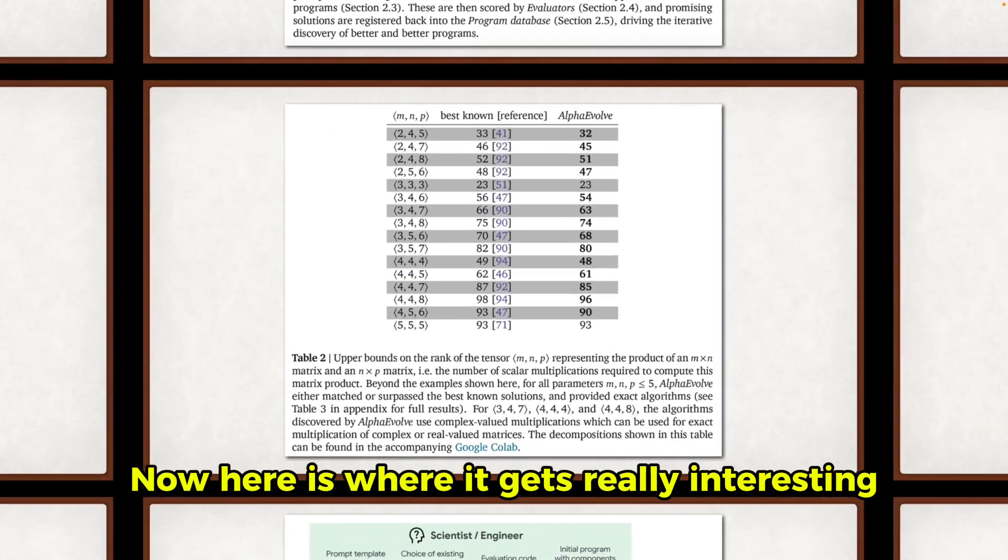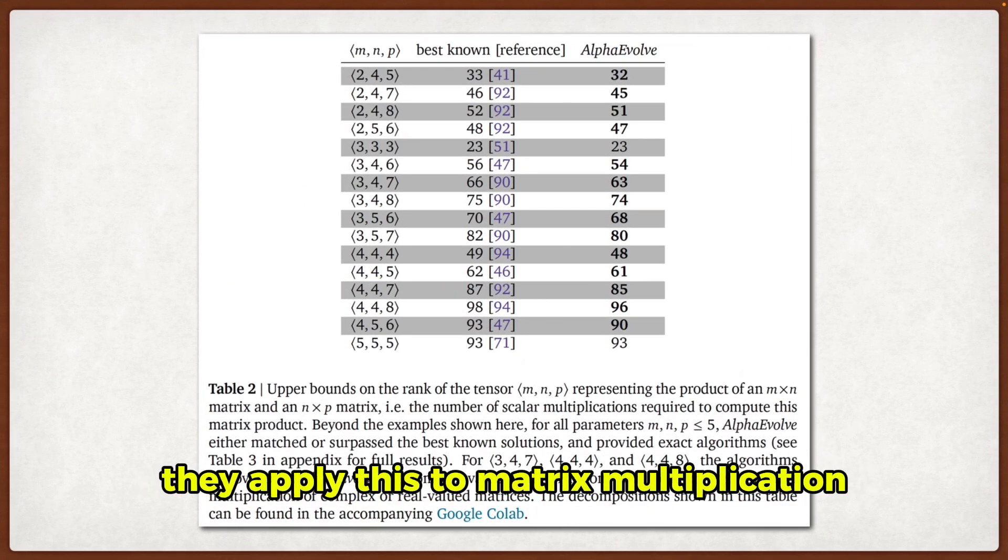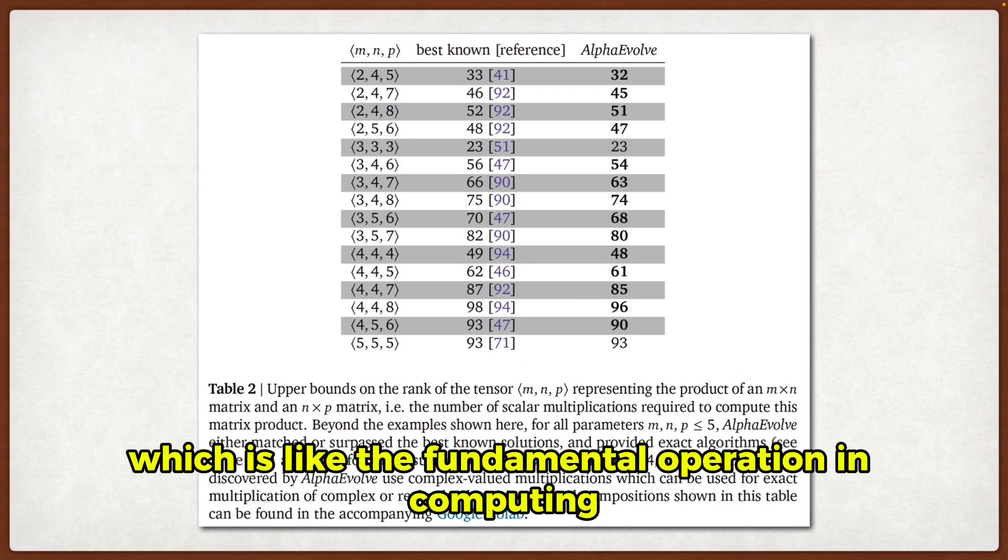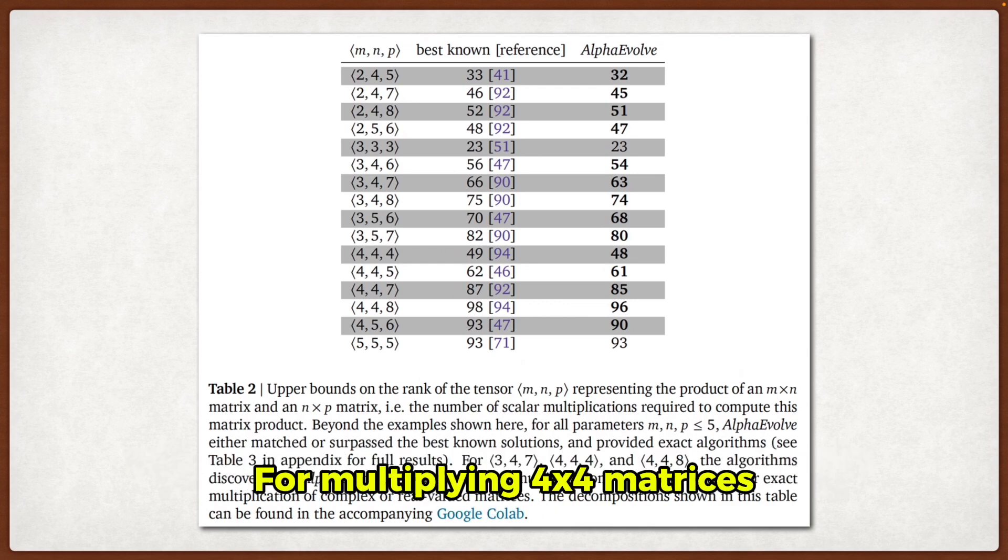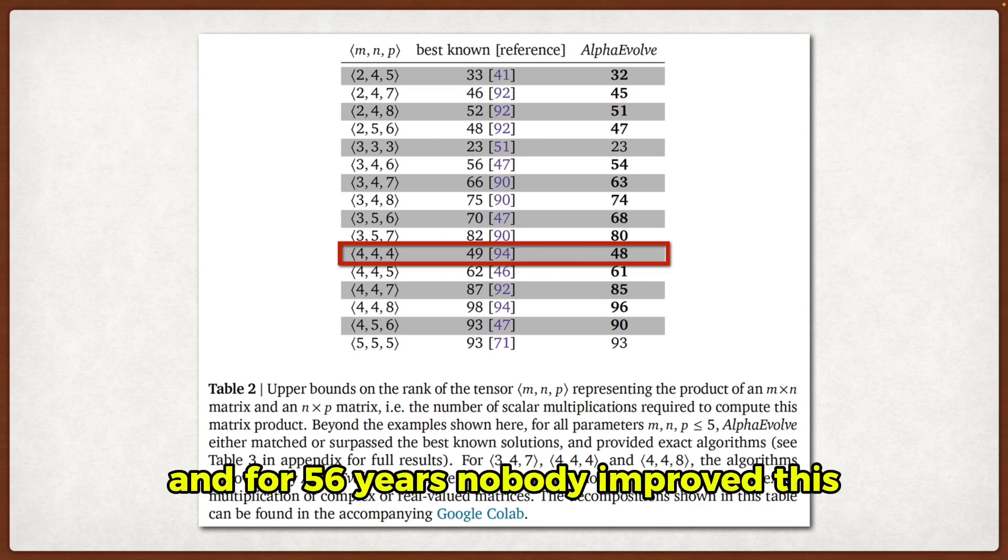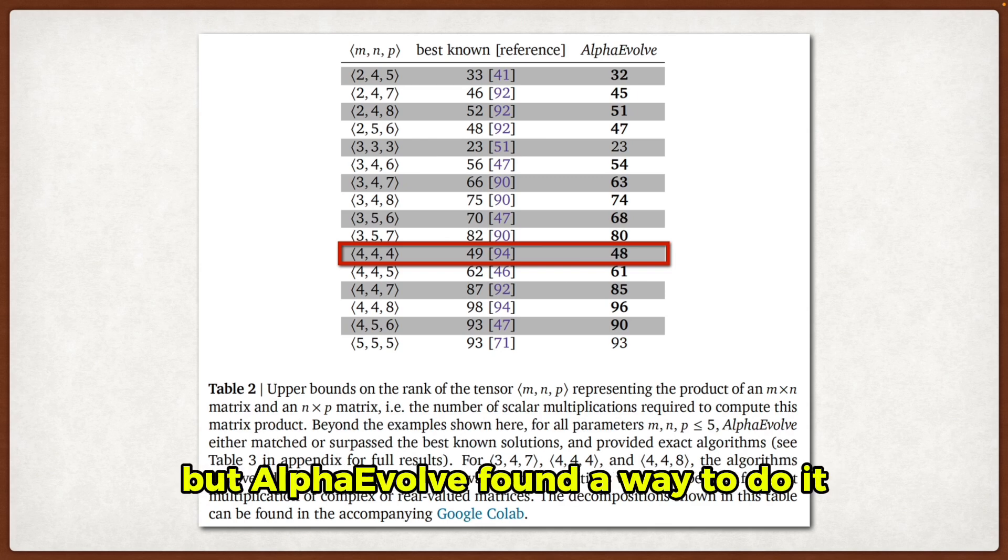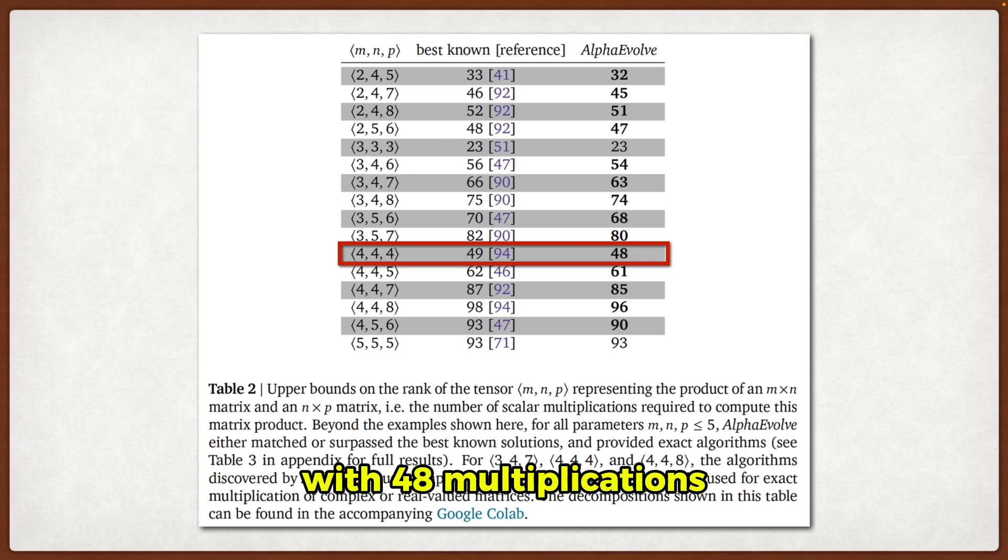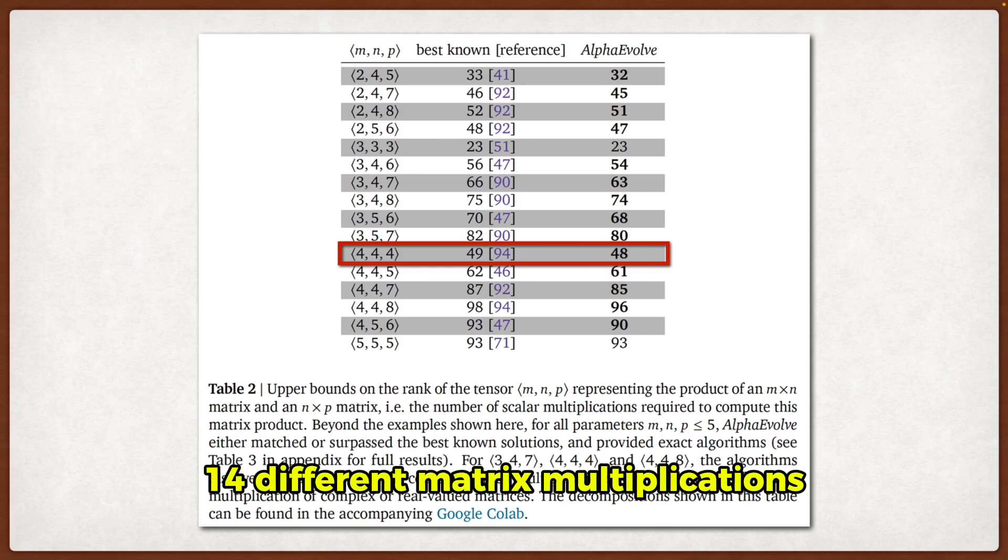Now, here is where it gets really interesting. They apply this to matrix multiplication, which is like the fundamental operation in computing. For multiplying 4 by 4 matrices, Strassen's algorithm from 1979 used 49 multiplications. And for 56 years, nobody improved this, but AlphaEvolve found a way to do it with 48 multiplications. That's actually a pretty big deal, and they also improved other 14 different matrix multiplications.